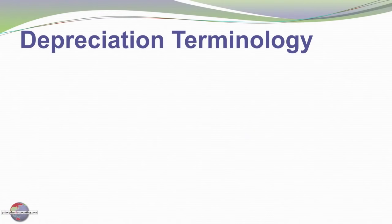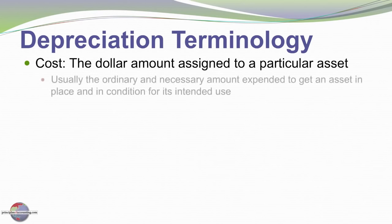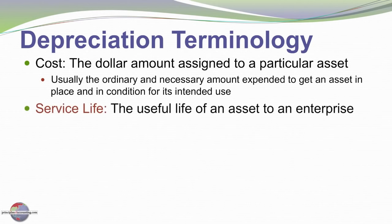Let's move on and consider some terminology, which becomes very important as we move forward. First of all, the cost of an asset is the dollar amount assigned to a particular asset — the ordinary and necessary amount expended to get an asset in place and in condition for its intended use, including those costs appropriately capitalized as discussed in earlier modules.